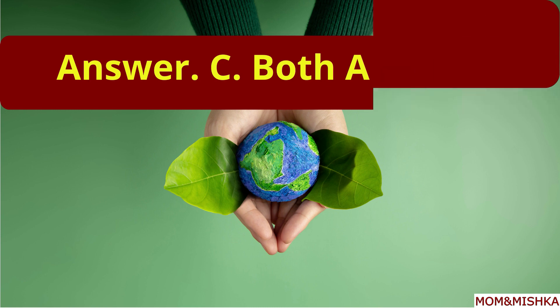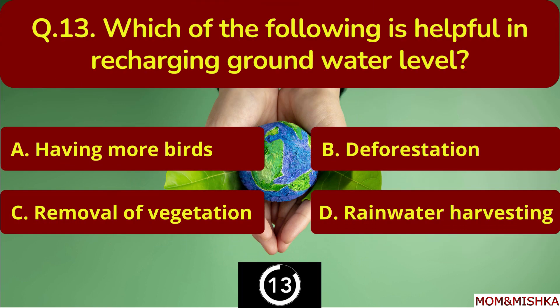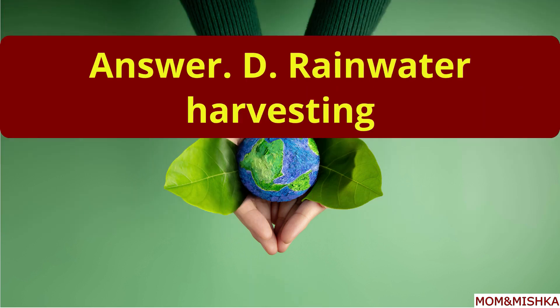Which of the following is helpful in recharging ground water level? It's option D — rainwater harvesting.